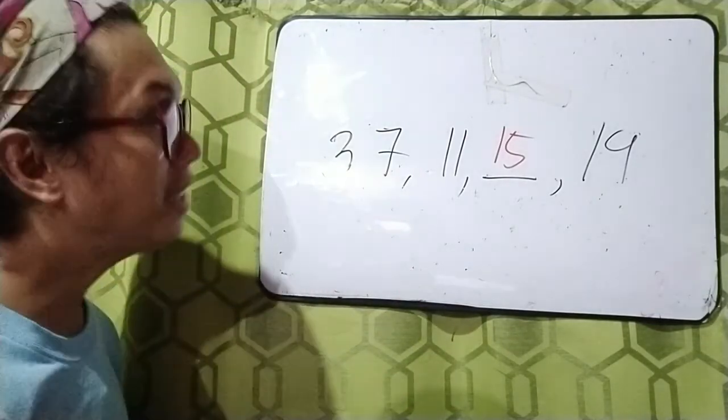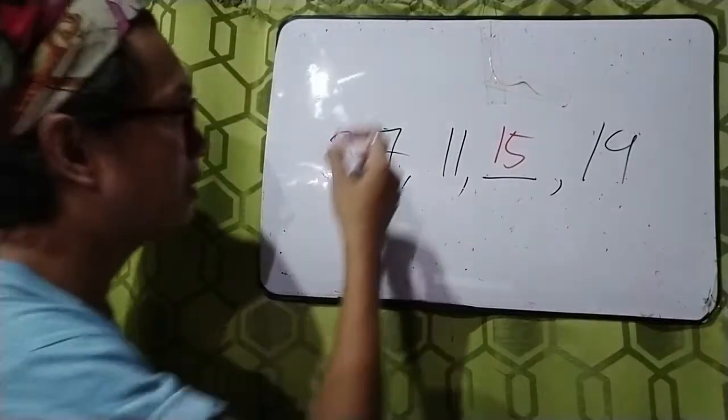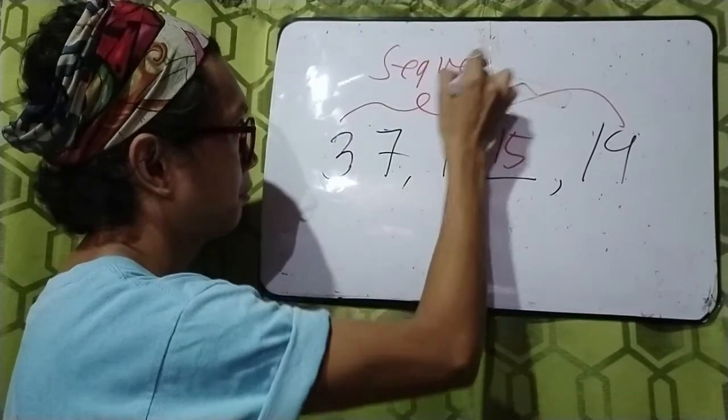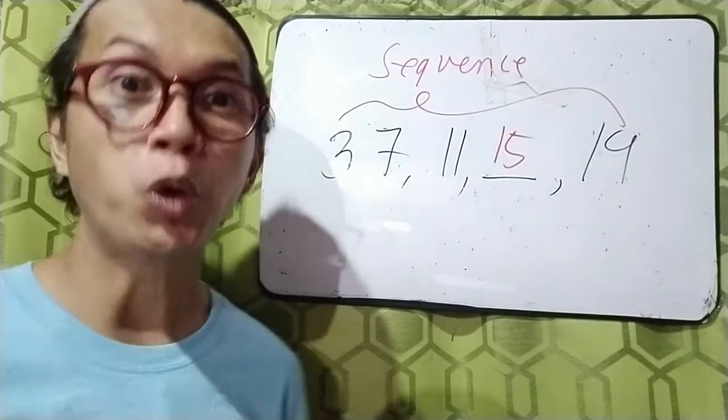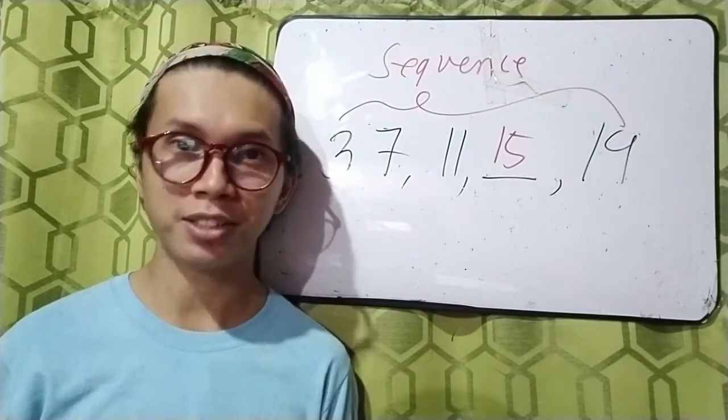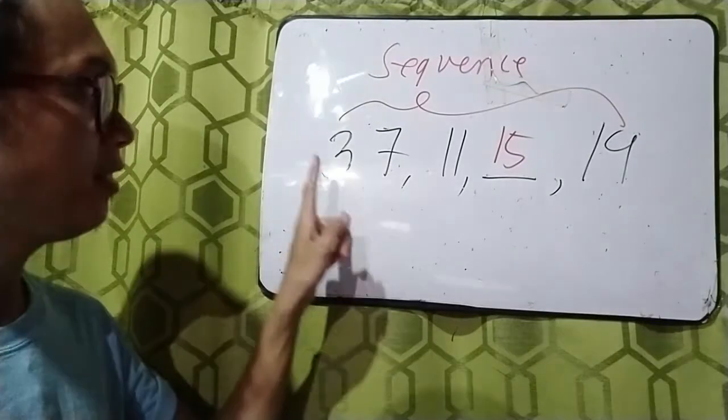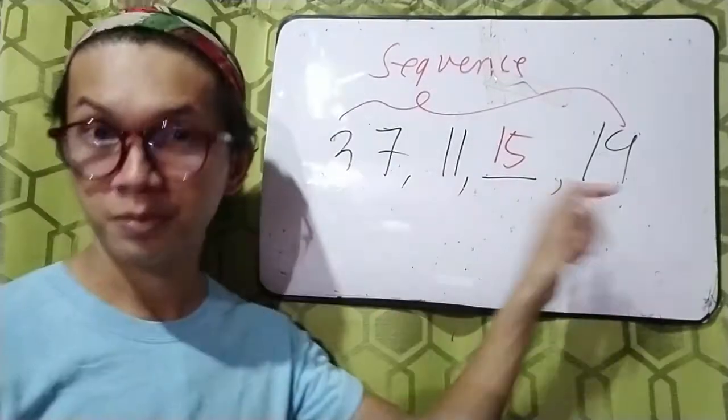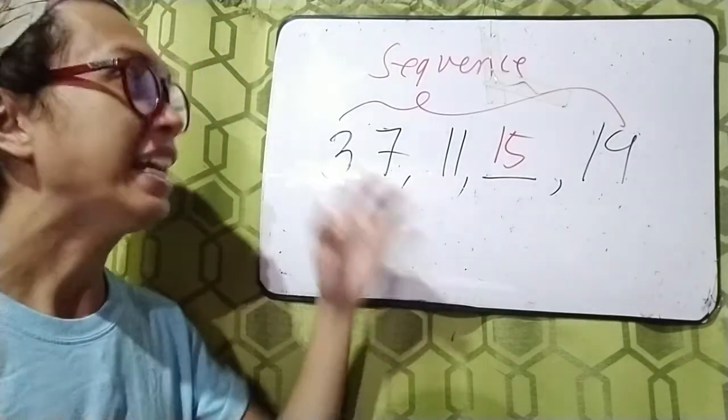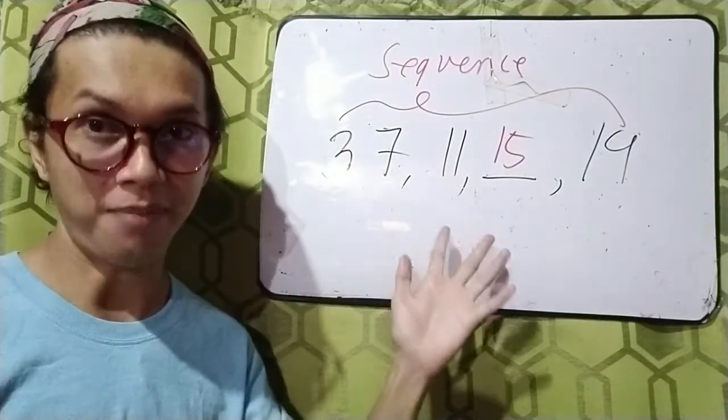Actually, this arrangement of numbers is called a sequence. Or in layman's term, it is called number patterns. Why number patterns? Because these numbers here follow a certain pattern. You cannot disarrange them.